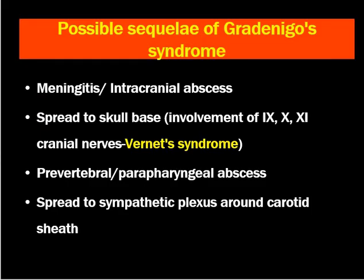What are the possible sequelae of Gradenigo's syndrome if untreated? The infection might lead to meningitis or intracranial abscess formation. The infection may spread to the skull base, leading to involvement of the 9th, 10th, and 11th cranial nerves — so-called Vernet syndrome. The infection might also spread to the prevertebral or parapharyngeal spaces, leading to parapharyngeal space abscess formation, and can even spread to the sympathetic plexus around the carotid sheath.